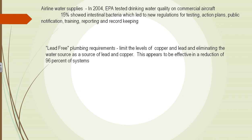The EPA also looked at commercial aircraft water systems. Testing found that 15% showed intestinal bacteria — for example, E. coli — in airline water supply systems. Consequently, new regulations were developed for testing: action plans had to be developed, the public had to be notified, and flight attendants had to be ready to prove that the water on board was safe for drinking.